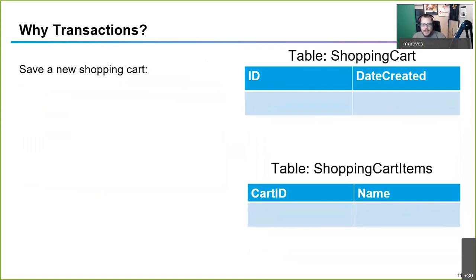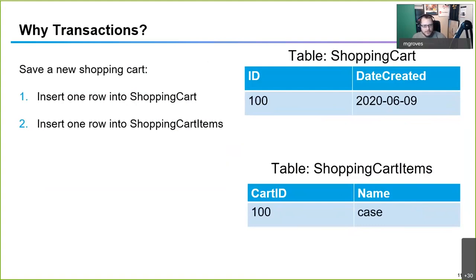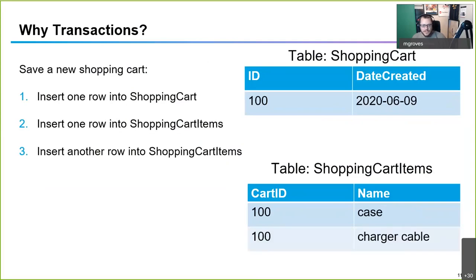This is why transactions are super important. To create and save a new shopping cart, we have to go through a number of steps: insert a row into the shopping cart, insert a row into shopping cart items, add another item row, then commit. Commit tells the database we're done — it's all atomic. The customer has added two items to the cart.